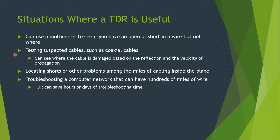We know that we can use a multimeter to see if we have an open or short in a wire by testing both of its ends, but we can't necessarily tell where that short or open would occur. So we can test suspected cables, such as coaxial cables, using the TDR to see where the cable is damaged based off of the reflection and the velocity of propagation entered into the TDR. A TDR is also useful for locating shorts or other problems among the miles of cabling inside a plane or troubleshooting a computer network that can have hundreds of miles of wire.